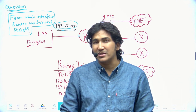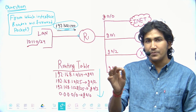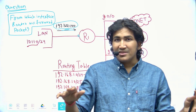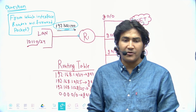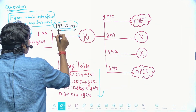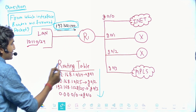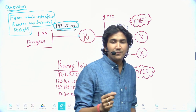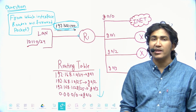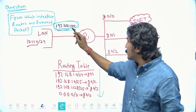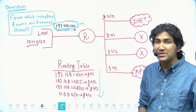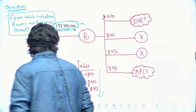If all parameters — prefix length, AD value, and metric — are the same, then the router will perform load balancing. But in this scenario, the router will check which routing table entry has the most specific network bits matching the destination IP address.